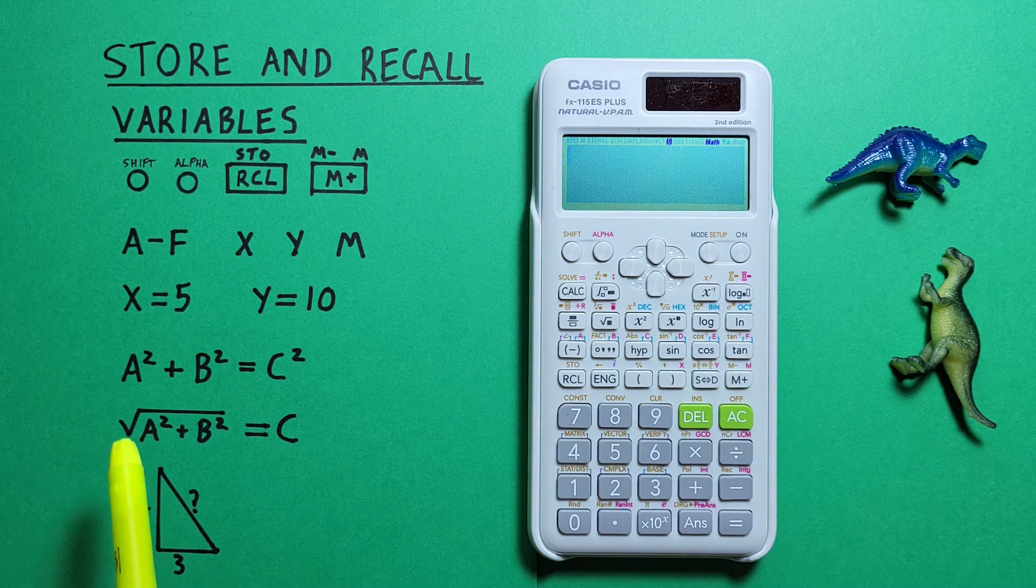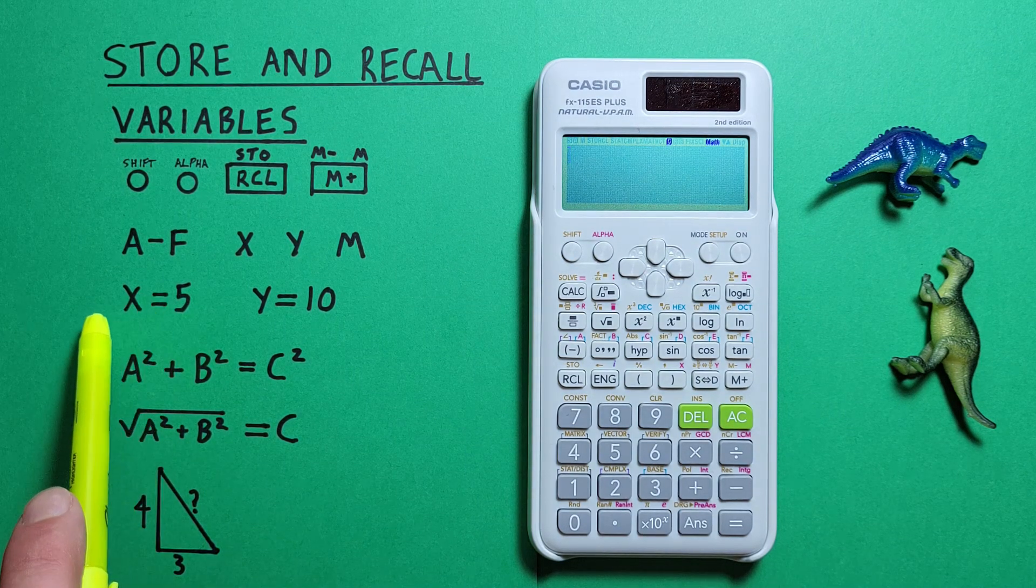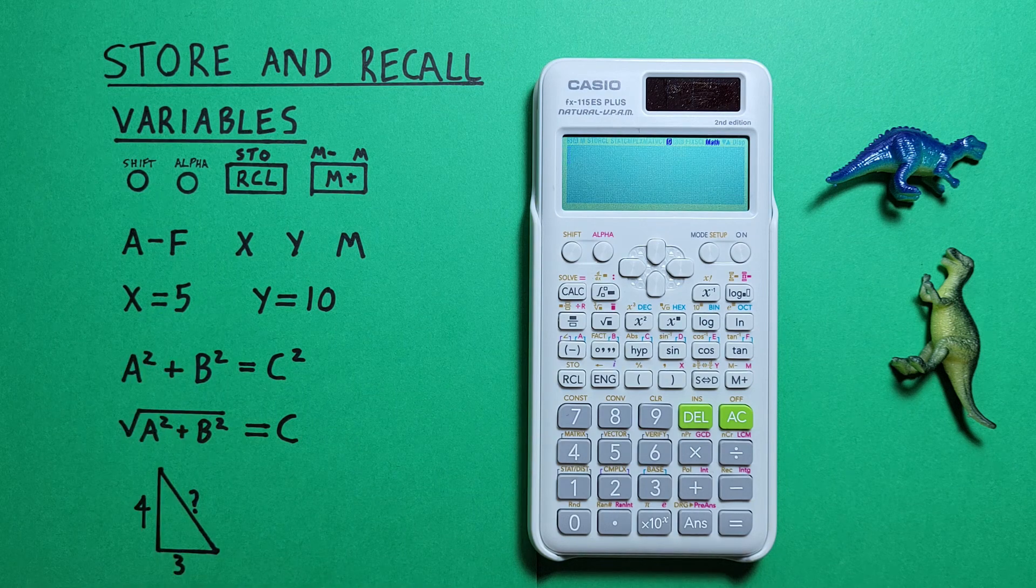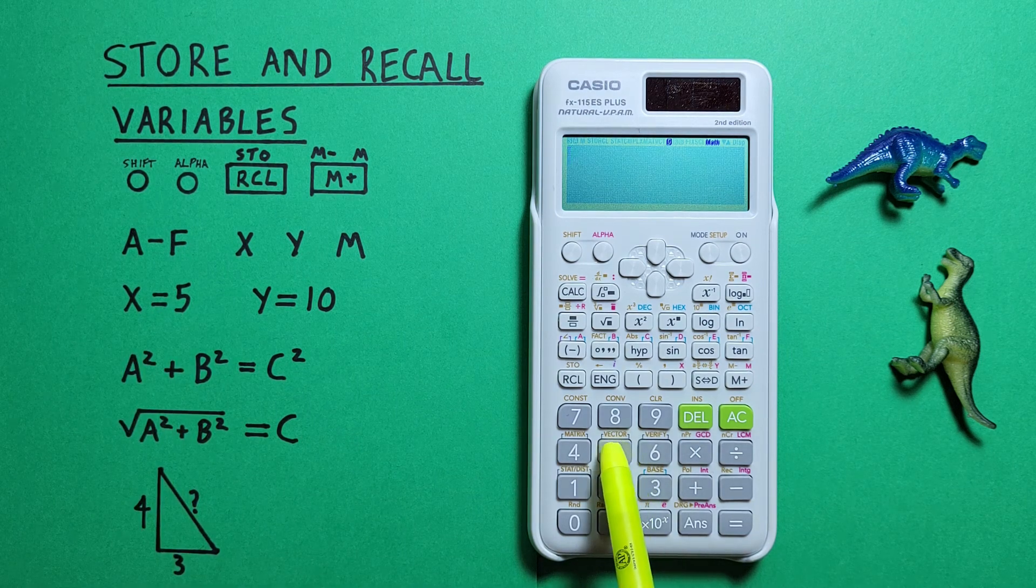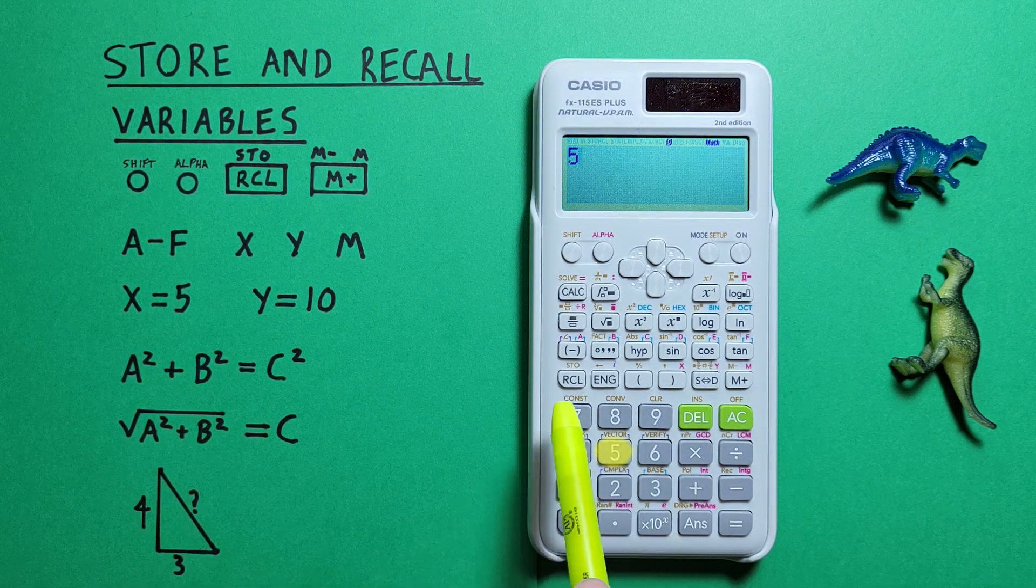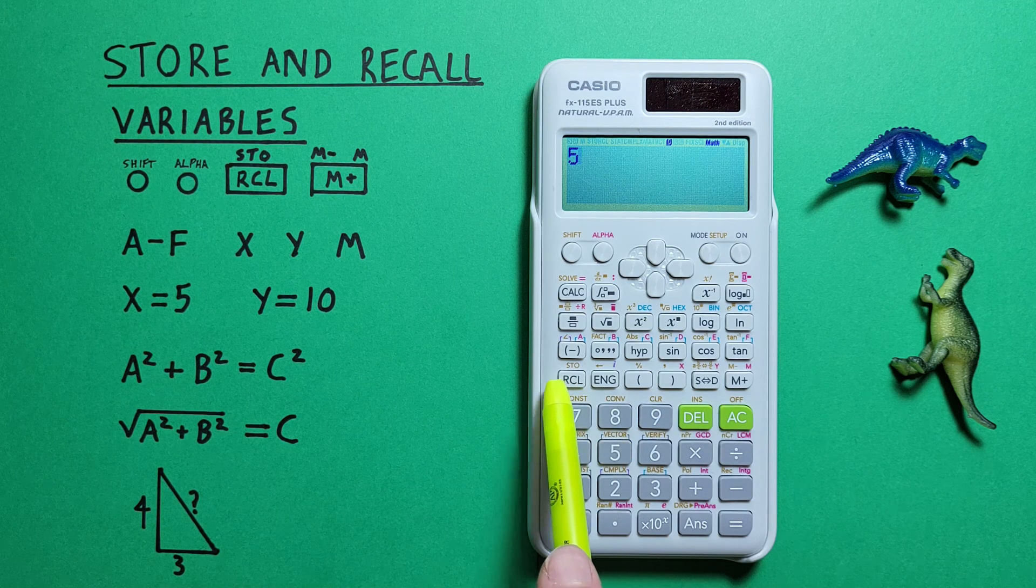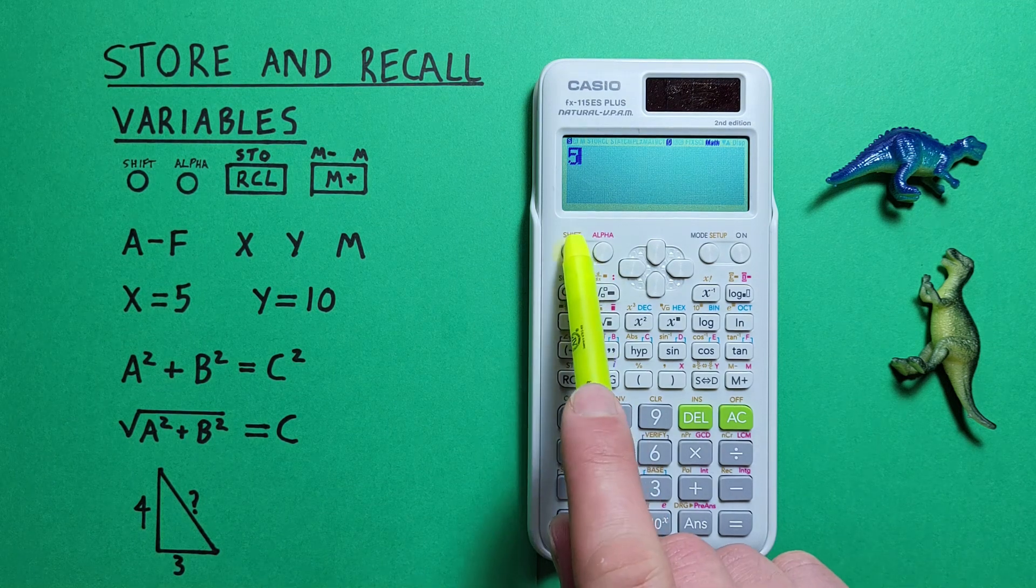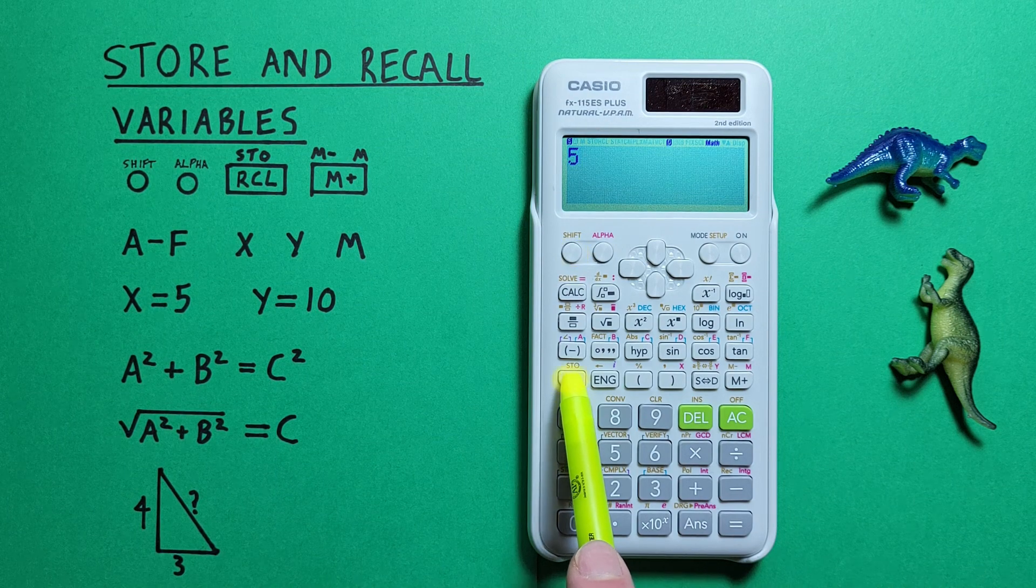Getting started, if we want to store a number like 5 as a variable in our calculator, what we do is place the 5 on our screen. Now store is the shift function of this RCL key, so we press shift RCL with the shift function of store.